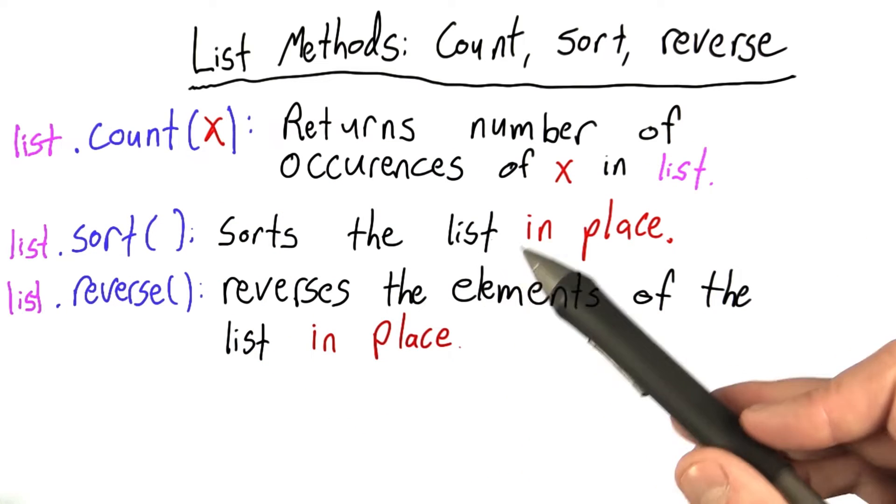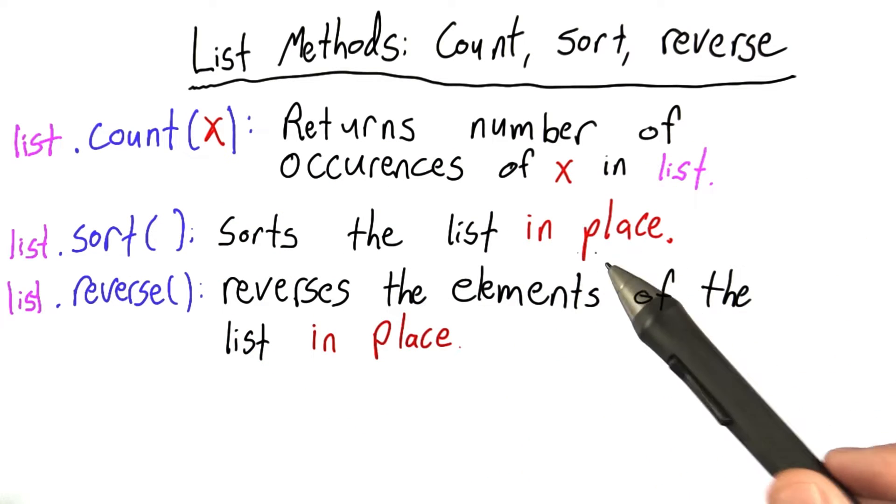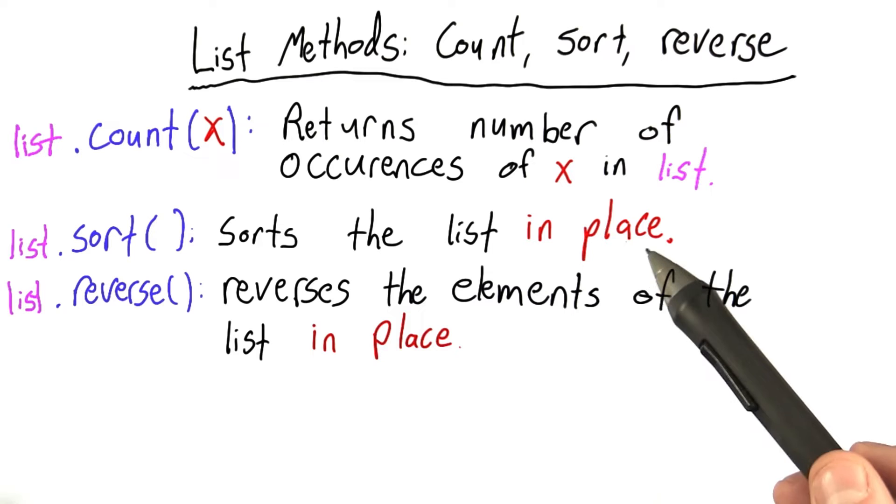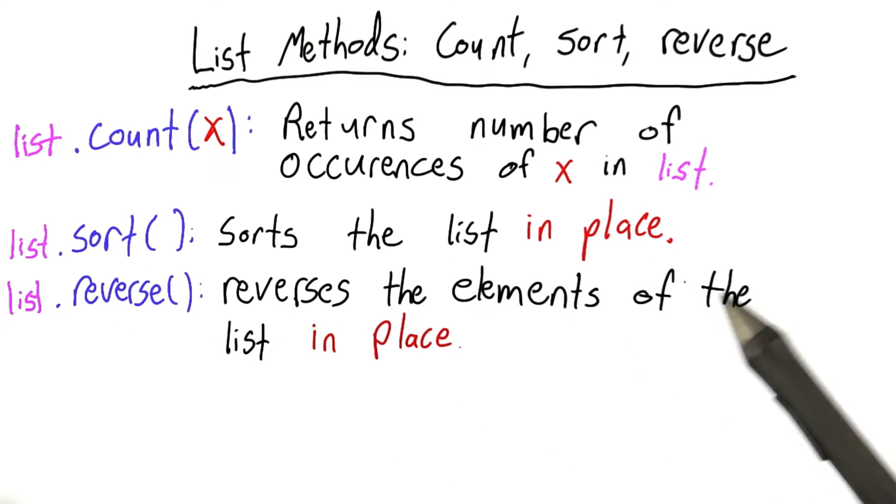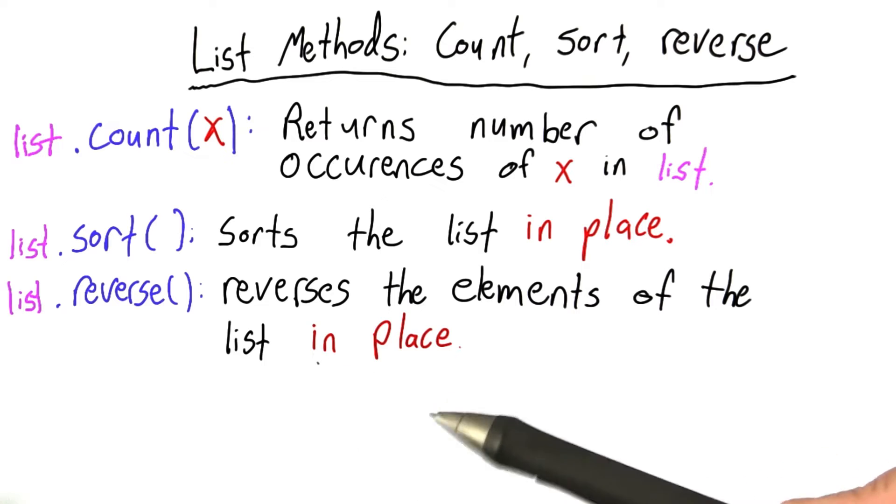list.sort() sorts the list in place, and I'll talk a little bit more about what in place means later. And list.reverse() does what you would think. It just reverses the elements of the list, and again, it does so in place.